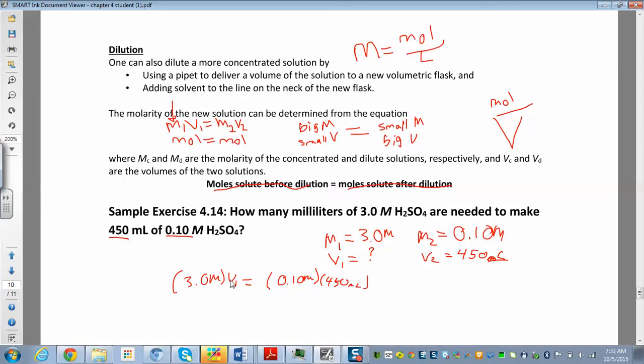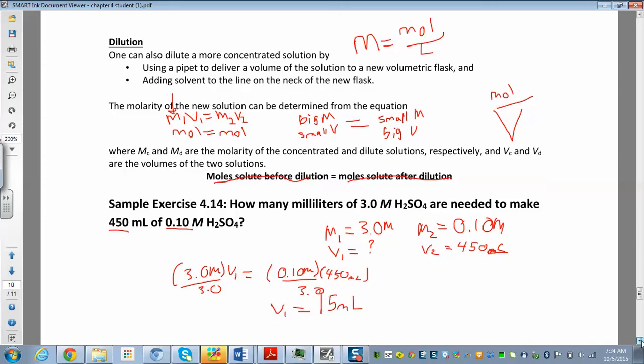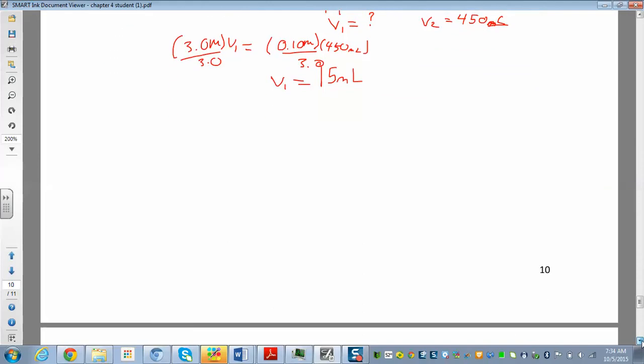We're just going to do 3 molar times V1 equals 0.1 molar times V2. We'll just divide by 3. So that equals 15 milliliters. There's a few homework problems that look just like that.